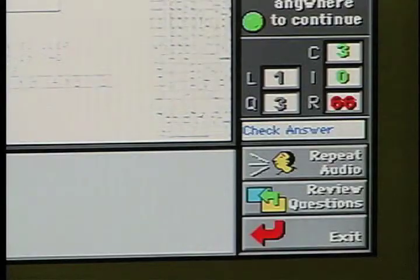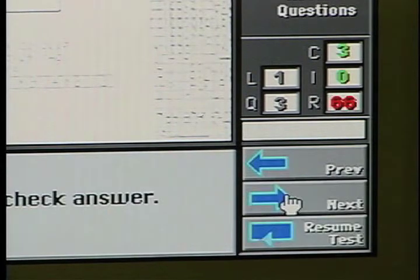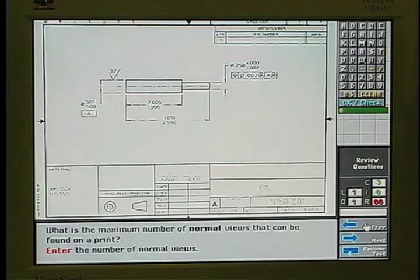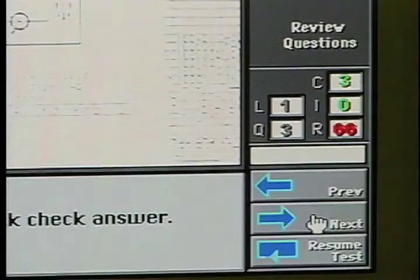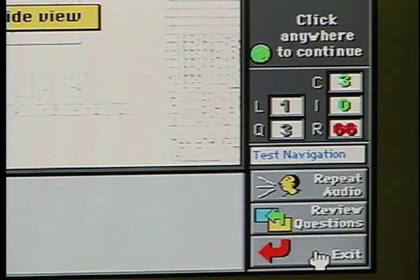The Review Questions button in the lower right portion of the screen allows a person to return to a previous question for review. This is especially useful when a question is incorrectly answered and a trainee wishes to return to see how they made their mistake. The Resume Test button returns them to the point where they stopped the test and continues the testing process.